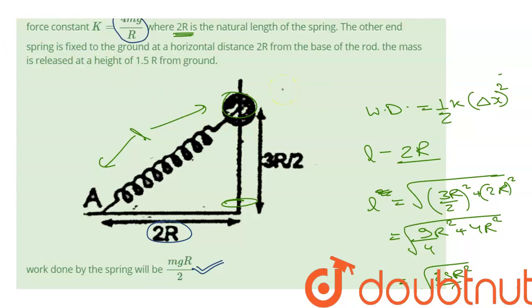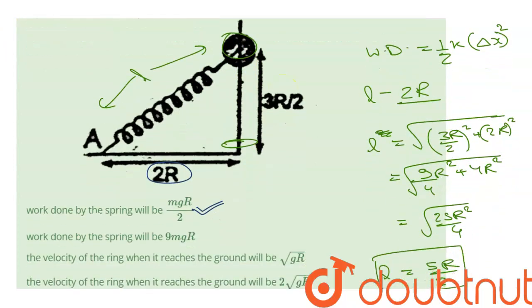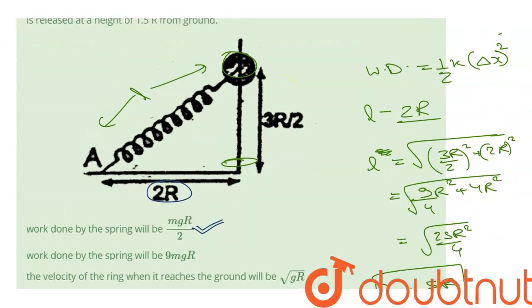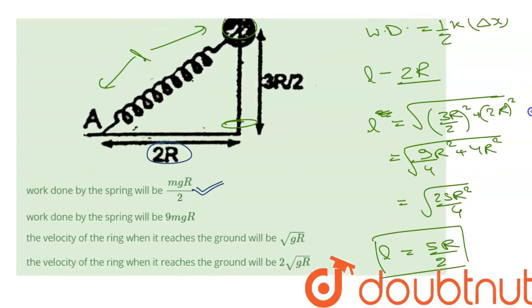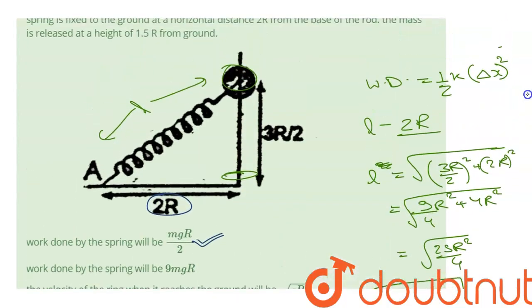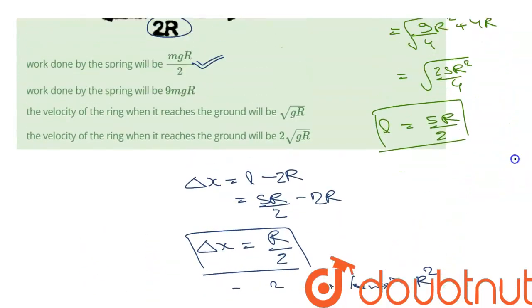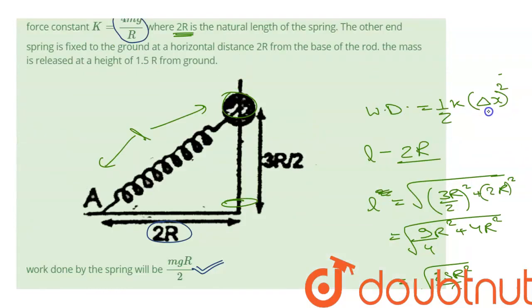Now for the velocity: there is no friction involved, so there is no loss of mechanical energy. I can equate the total mechanical energy when the spring was stretched and the ring was at the top (TE1) to the total mechanical energy when the ring is at the bottom and the spring is un-stretched.